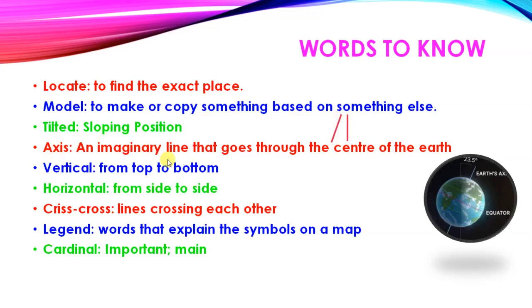Axis: an imaginary line that goes through the center of the earth. Vertical: from top to bottom. Horizontal: from side to side. Criss-cross: lines crossing each other. These lines crossing each other are known as criss-cross.